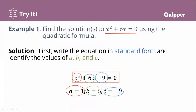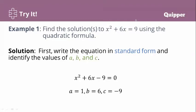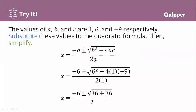Remember the pattern: ax squared plus bx plus c equals 0. Now that we have the values of a, b, and c, we plug them into the quadratic formula: x equals (negative b plus or minus square root of (b squared minus 4ac)) divided by 2a. Substitute the values: a equals 1, b equals 6, and c equals negative 9.